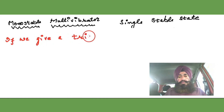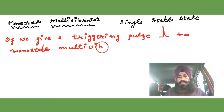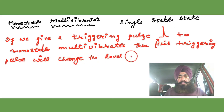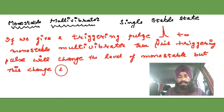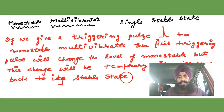Now if we give a trigger pulse to the monostable multivibrator, it will change its state. If it is already at a low level, it will shift to the high, and will remain there for a short time, then come back again to the stable state. So the trigger pulse shifts its state temporarily — the shifting is temporary, and it comes back to the original state after just a short while.